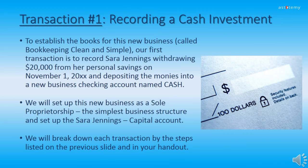Now we get into the hands-on component of our module, starting with transaction one, where we record a cash investment into the business. We are going to set up a new business operating as a sole proprietorship called Bookkeeping Clean and Simple. Our first transaction is to record Sarah Jennings' withdrawal of $20,000 from her personal savings account on November 1, 20XX, depositing the money into a new business checking account called cash. We will set up an owner's equity account called Sarah Jennings Capital. Let's get to it.